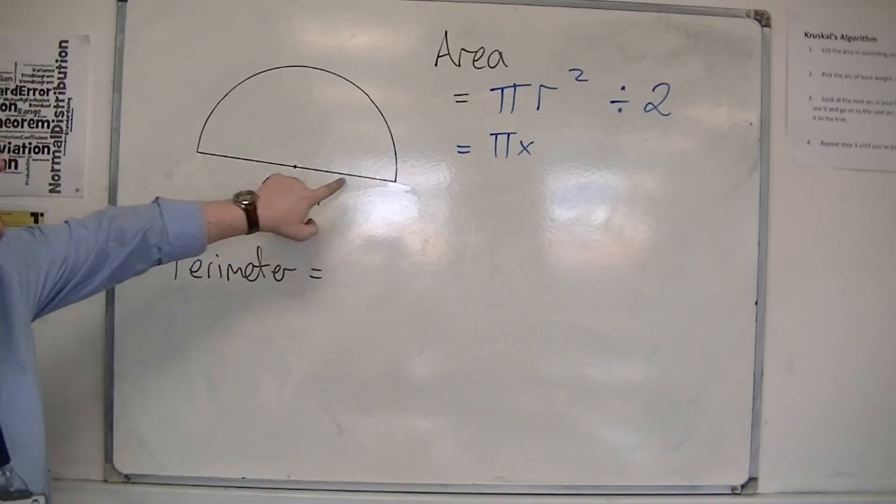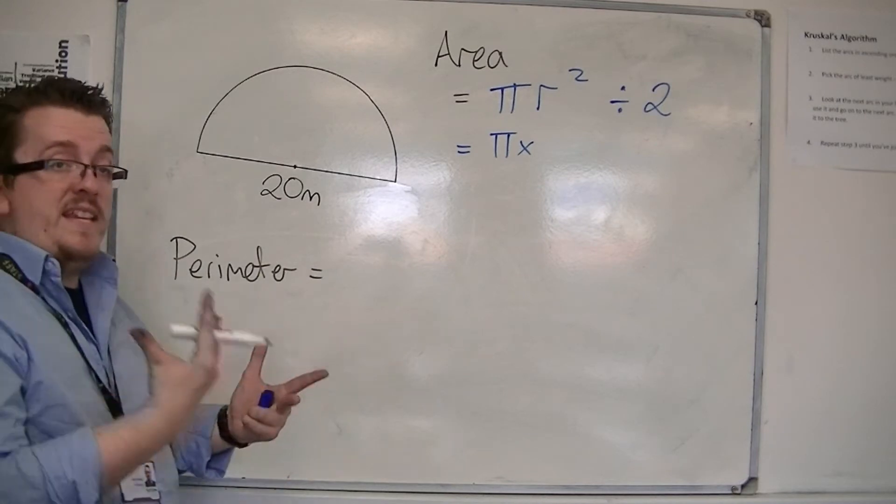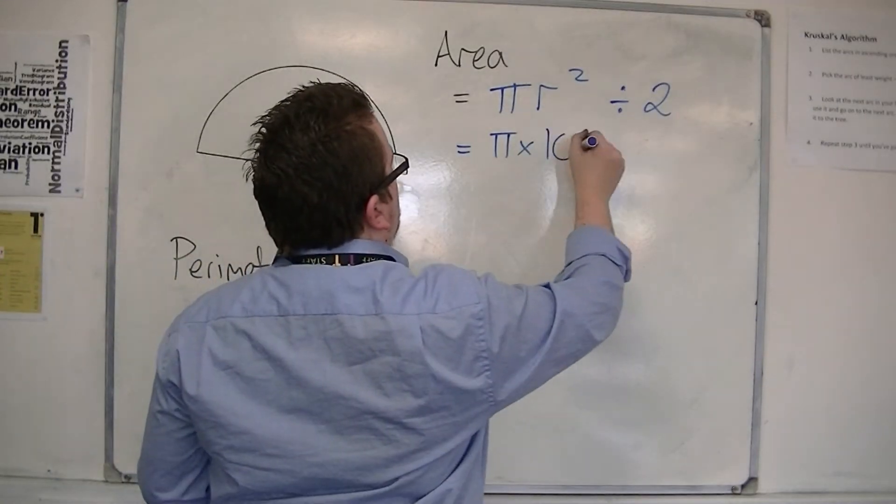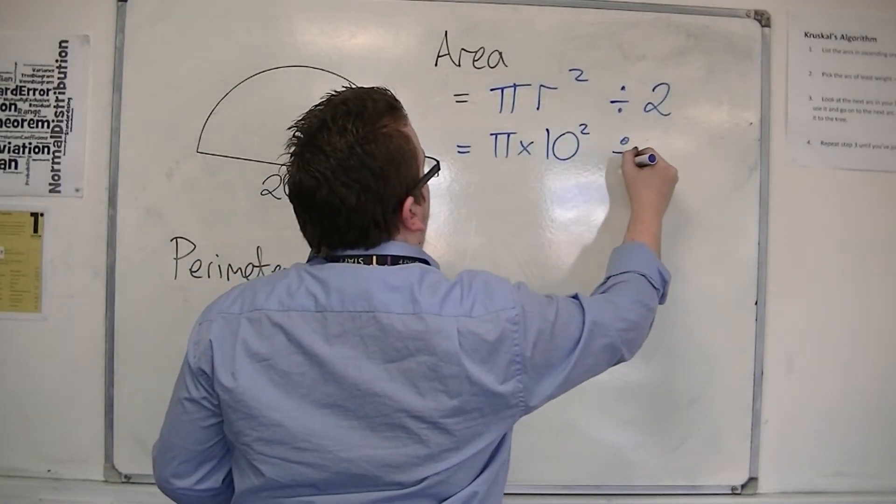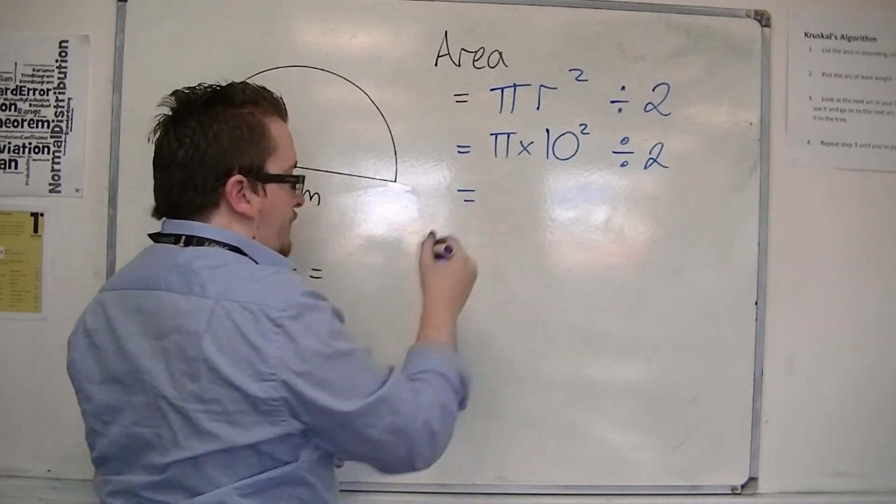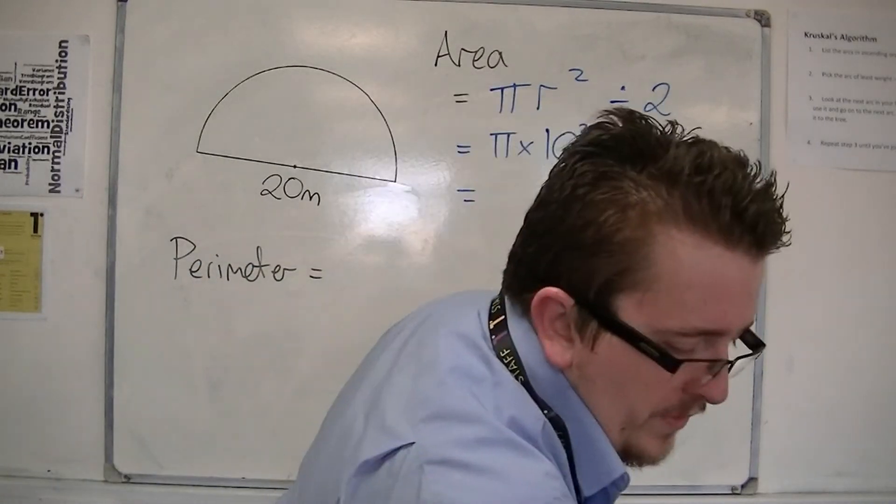Now, if the diameter is 20, then the radius is 10, half of that. So 10 squared, and then I'm going to divide my answer by 2. So with the calculator...